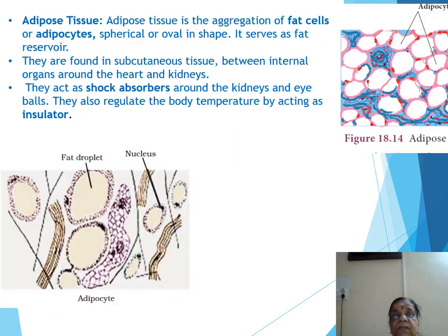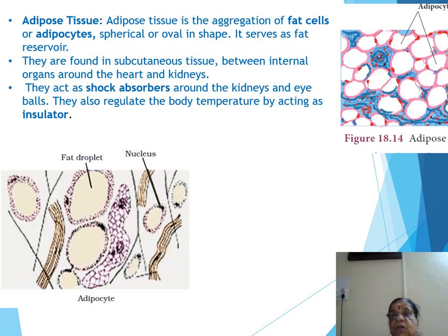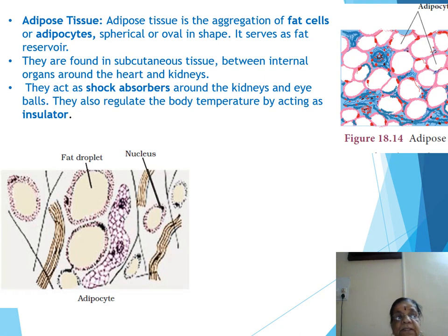The next type is adipose tissue. Adipose tissue is a connective tissue proper which is an aggregation of fat cells called adipocytes. Adipocytes can also be termed fat droplet cells. A single adipocyte has a spherical or ovoid shape.